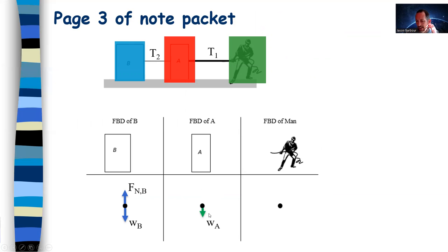Block A or crate A has weight. It's probably different than crate B, more or less. I drew it less here. There's a normal force. The man has a certain amount of weight, probably different than either of the crates, unless it just coincidentally was. I drew it differently.